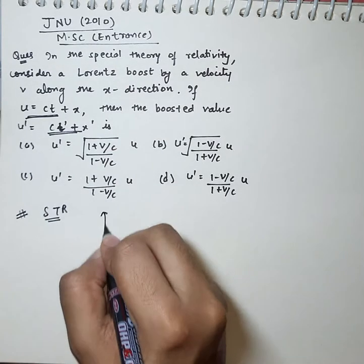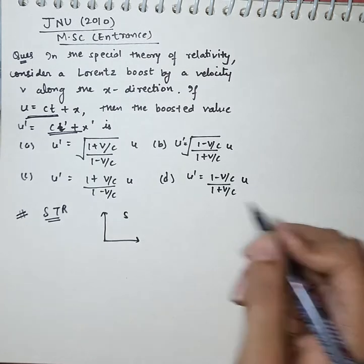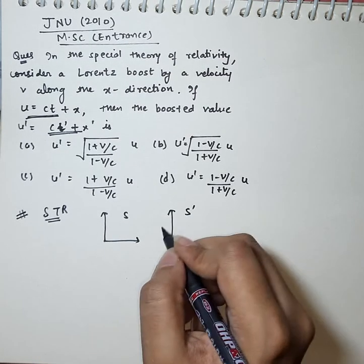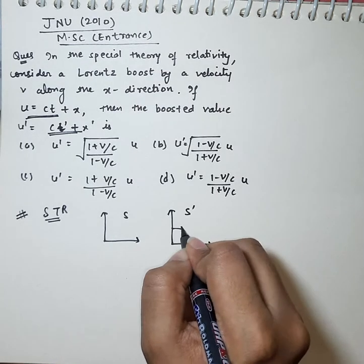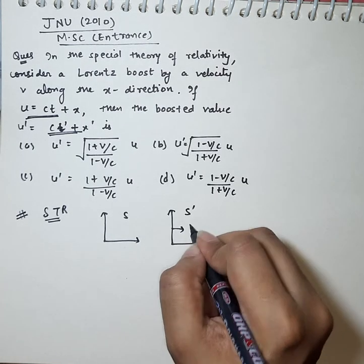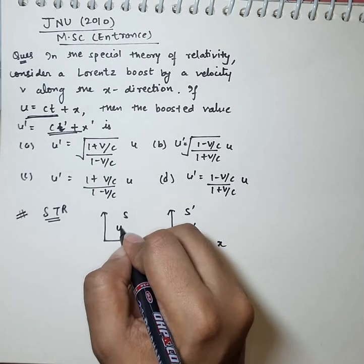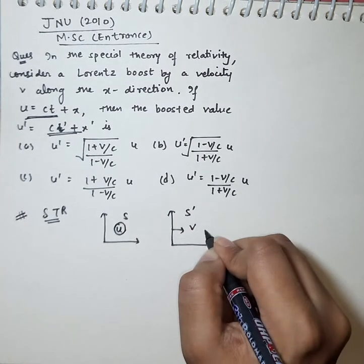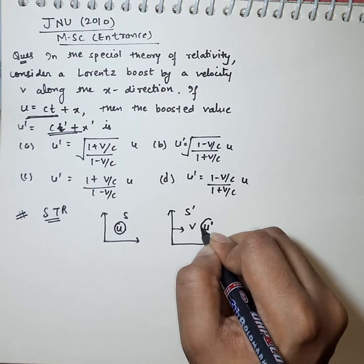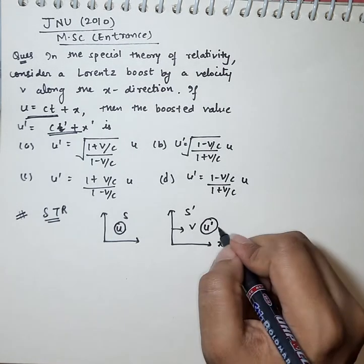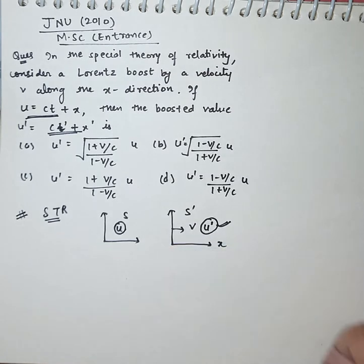Basically, it's saying that there's an S frame and another frame S', and this frame is moving with velocity v along the x direction. If u is the speed, then the speed of the particle measured is u'. So we have to calculate u'.